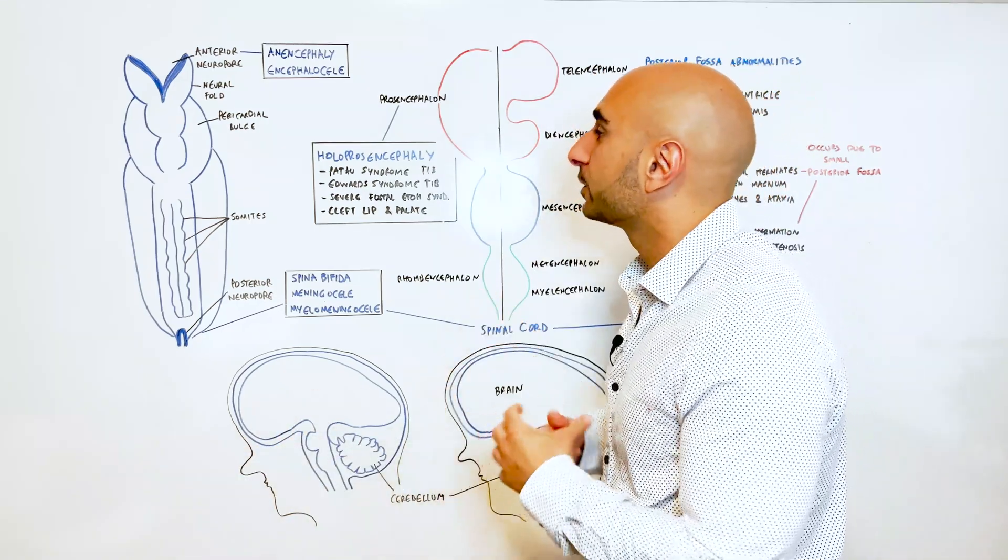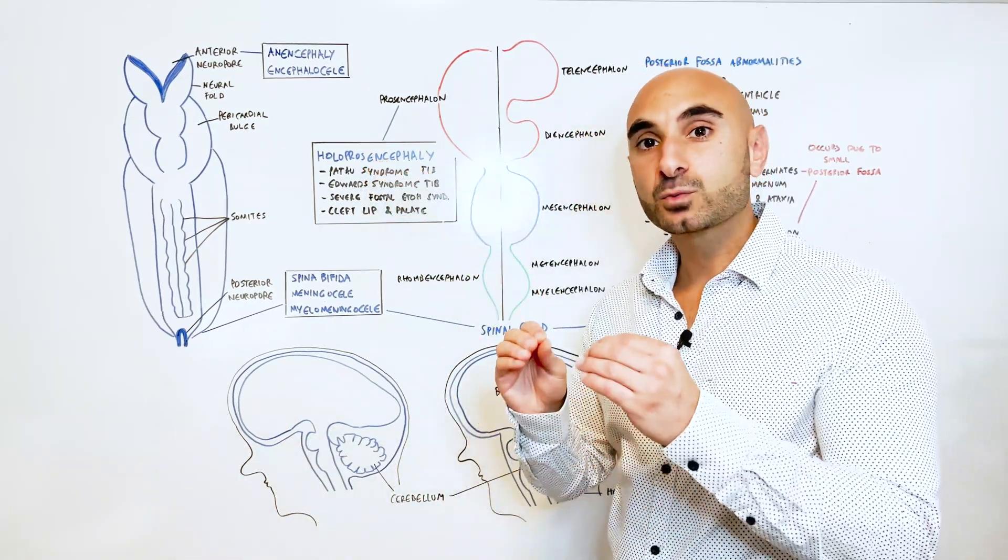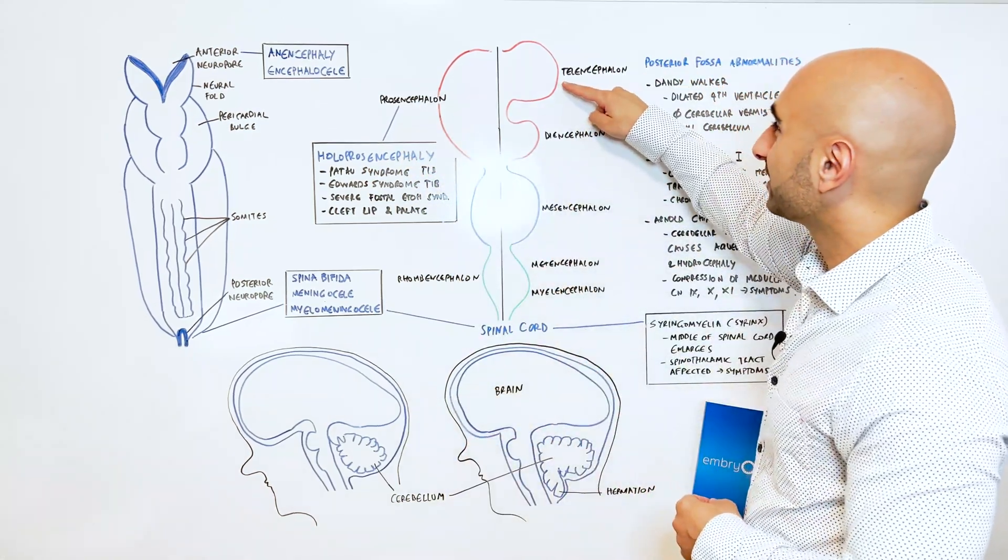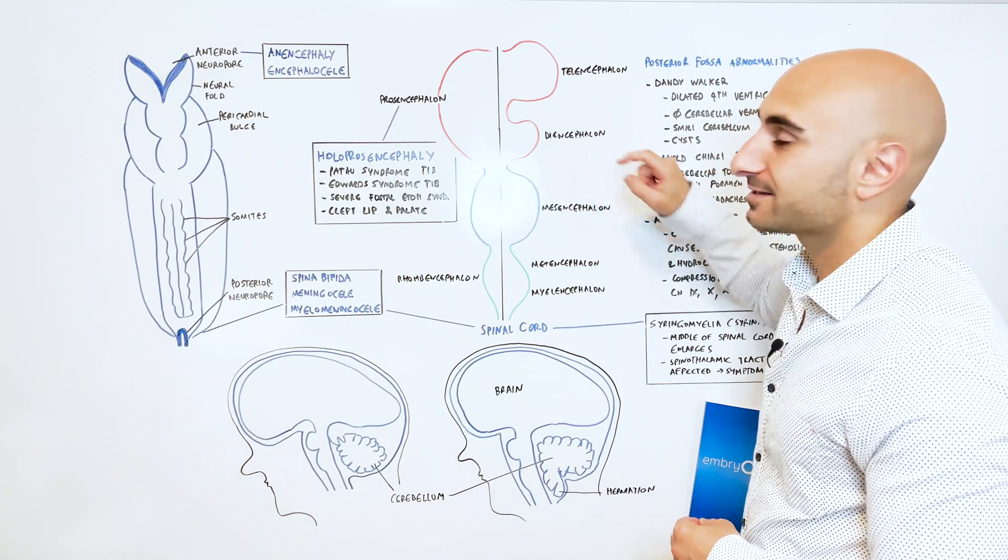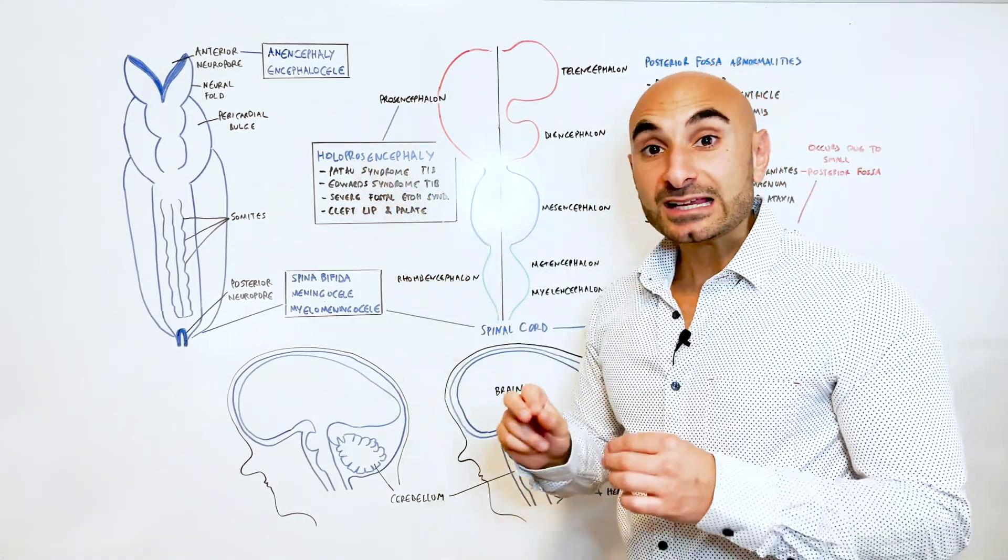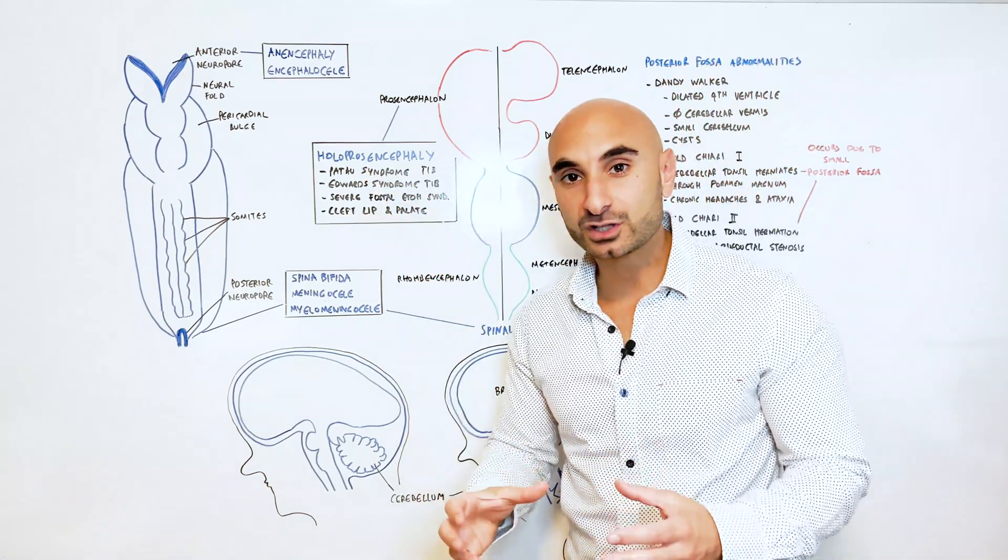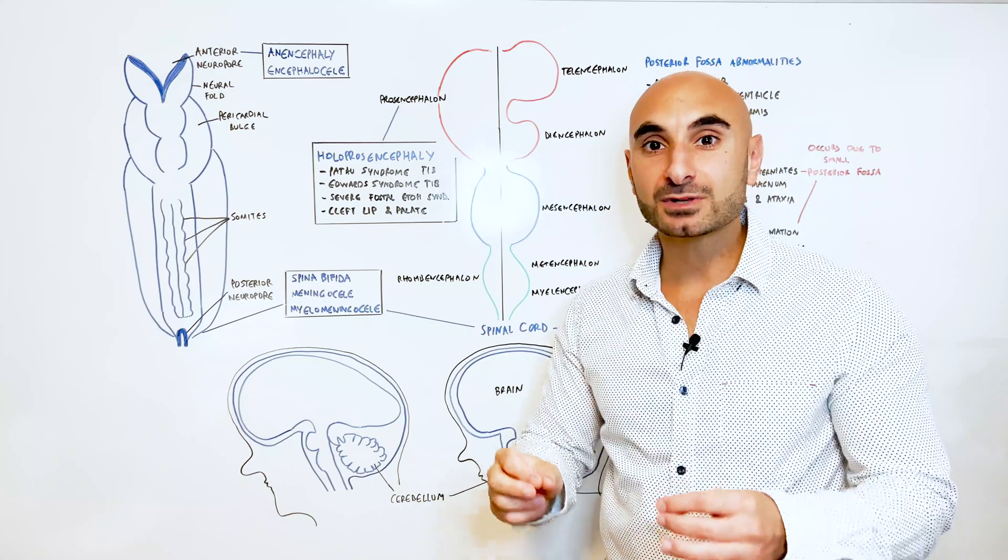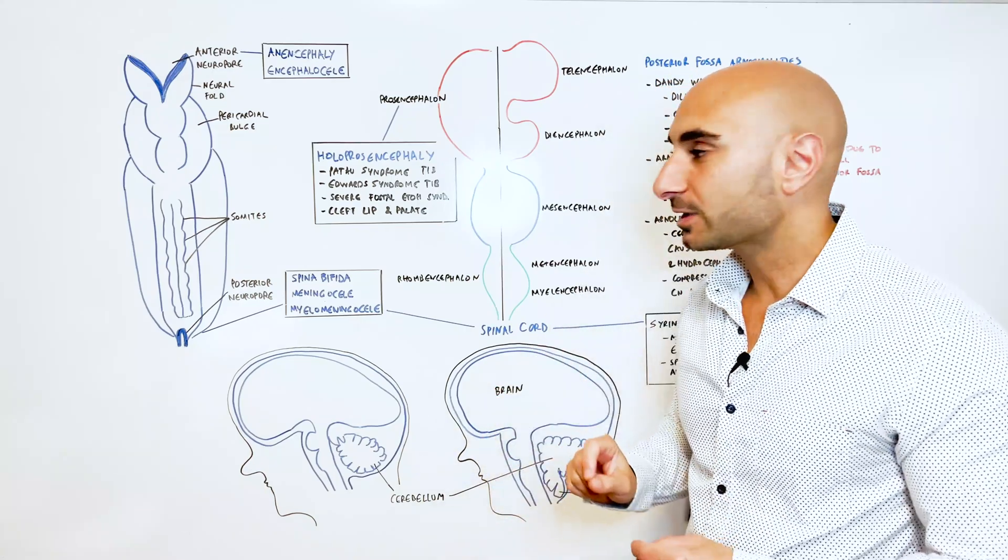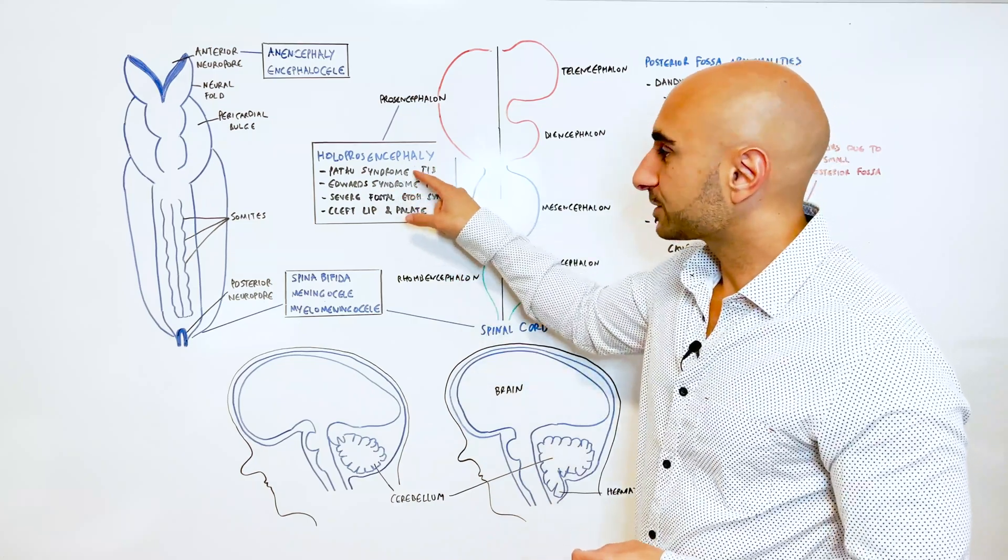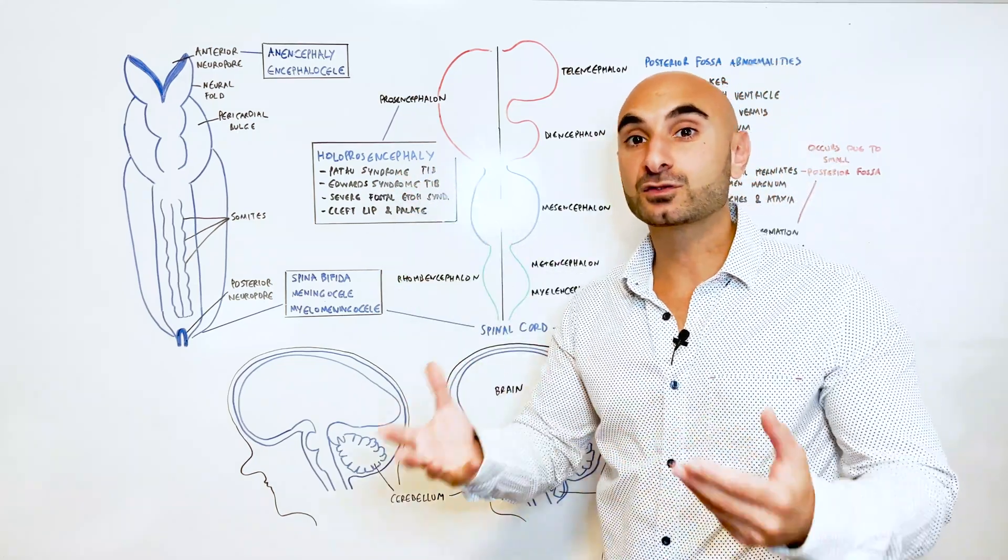And next issue, holoprosencephaly. That's when the prosencephalon, which is the forebrain, fails to divide into the telencephalon and into the diencephalon. This condition is associated with Patau syndrome, which is trisomy 13, Edward syndrome, which is trisomy 18, and severe fetal alcohol syndrome. These three that I've just listed will be discussed in a future video.